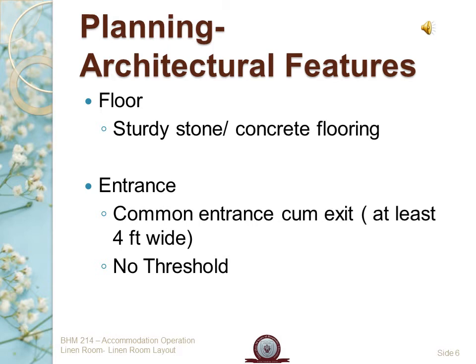Next comes the entrance of the linen room. Normally, we go for one entrance and exit for security purposes, which is why we prefer stable-type doors. When designing the linen room door, it should be at least four feet wide and should not have any kind of threshold. The reason: trolleys need enough area to enter and exit the linen room easily, and a threshold would be a barrier to their free movement.